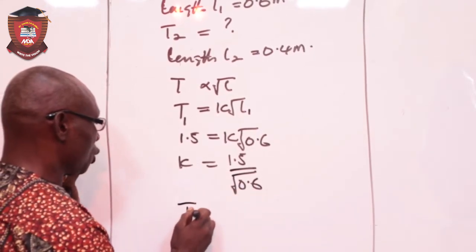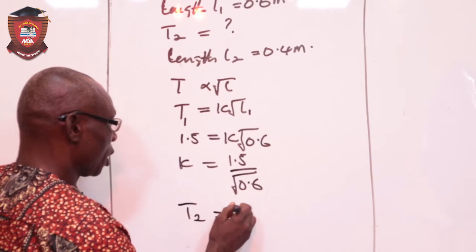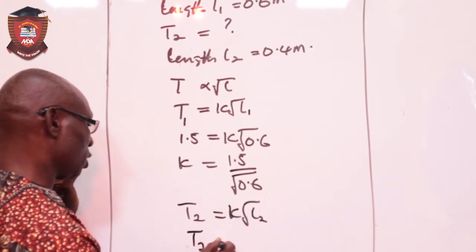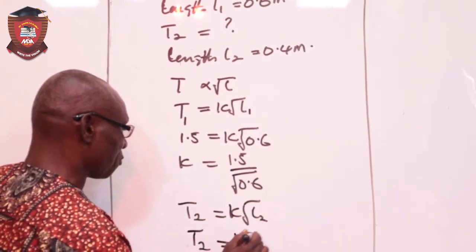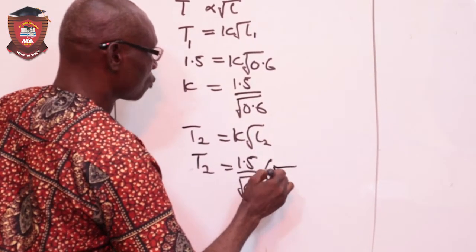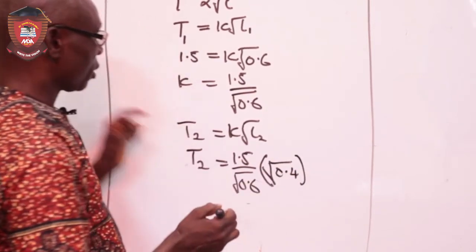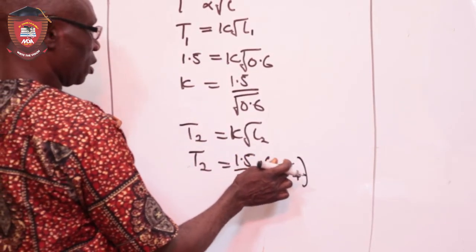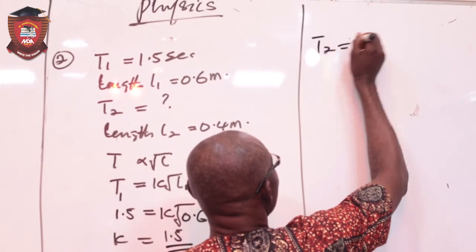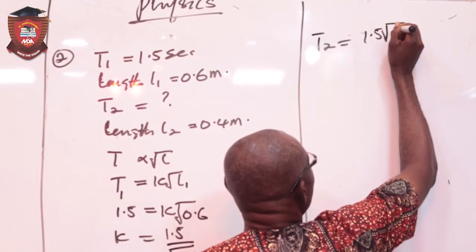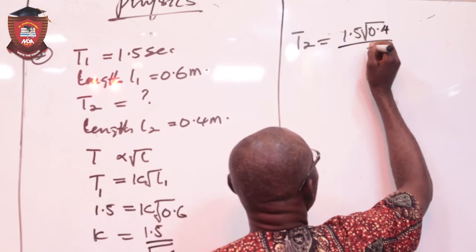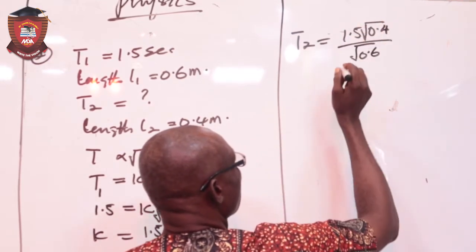With this constant now, T2 is now K root L2. So I have the value of K now. So that T2 will now be K is 1.5 over root 0.6 multiplied by the root of L2. L2 is 0.4. Then, if I work on this now, this is root, this is root. And this is going to match with 1.5. So I have that period 2 is 1.5 root 0.4 all over root 0.6. So I can now work on this.